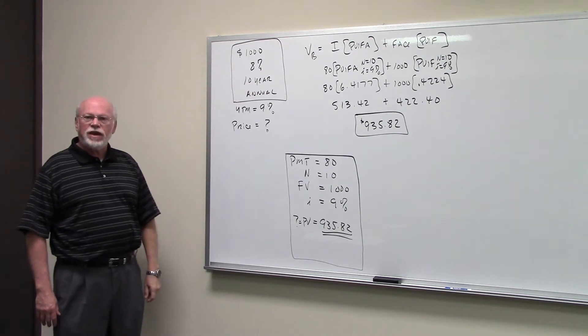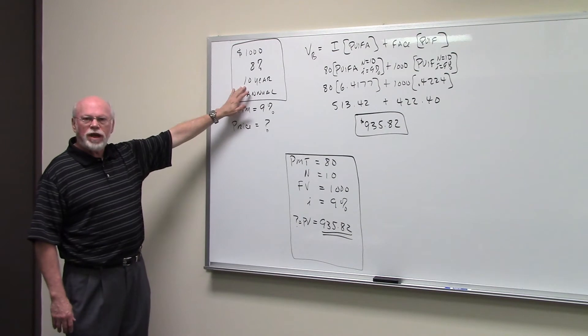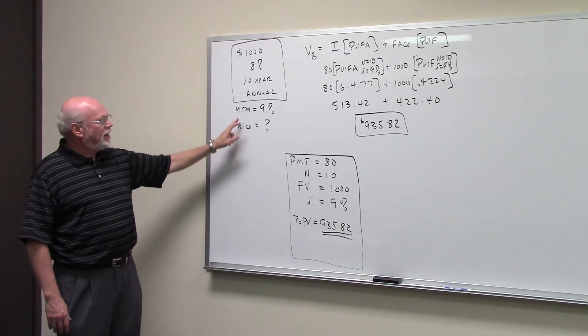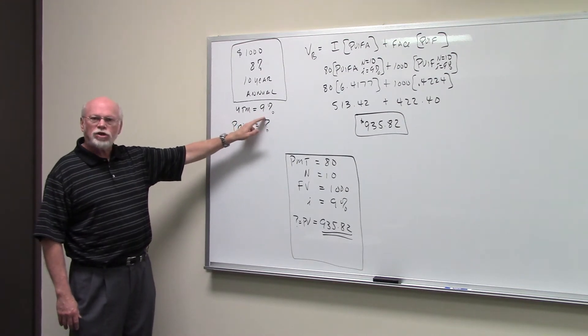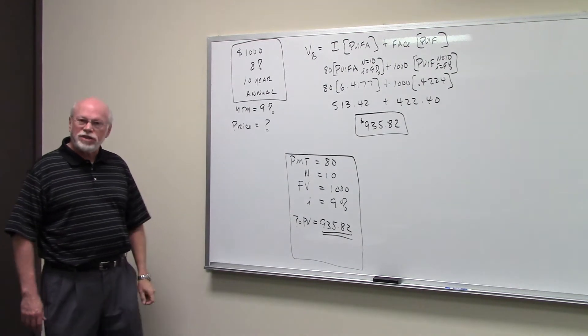It's got a $1,000 face value, an 8% stated return, it's got 10 years remaining on its life, and it pays interest annually. They tell us that the yield to maturity, the investor's required return, is 9%. Therefore, the question is what's the price of the bond?